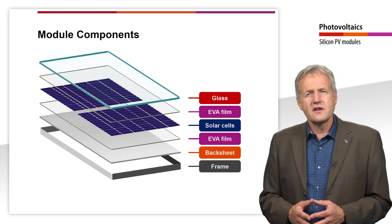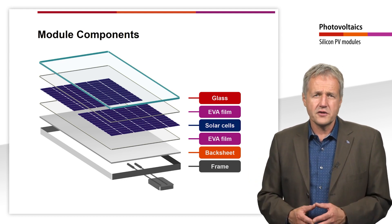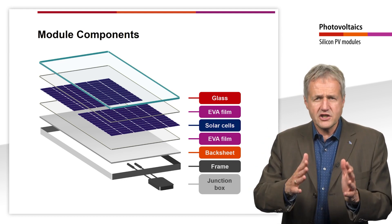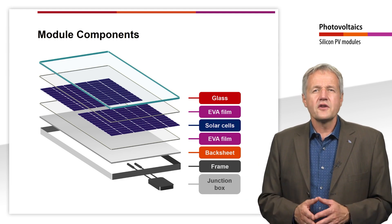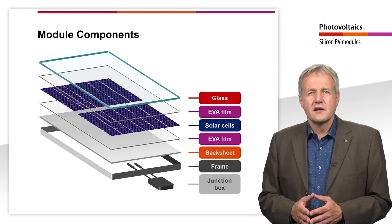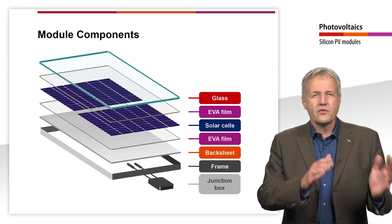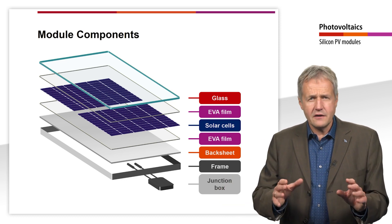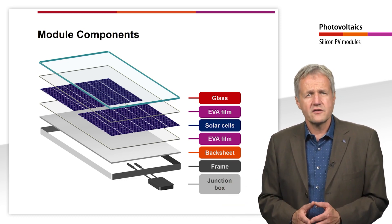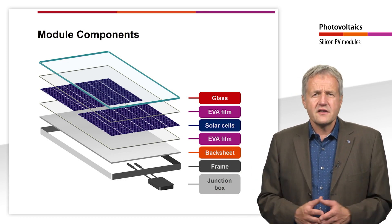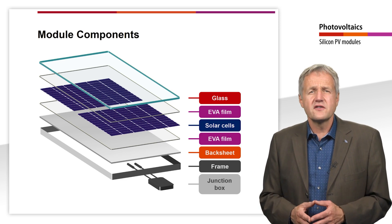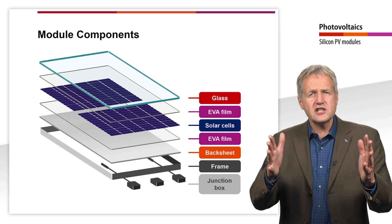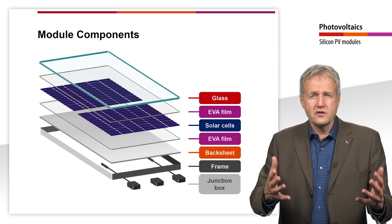The junction box is also attached to the rear side of the module. The tin-plated copper conductors of the cell strings are brought together in the junction box. The junction box also includes the necessary connection cable and plugs to connect the PV module with other modules or an inverter. In addition, the bypass diodes are installed here in the junction box. While there is a central junction box in full cell modules, it is often divided into three parts in half cell modules, with each bypass diode located in its own junction box.